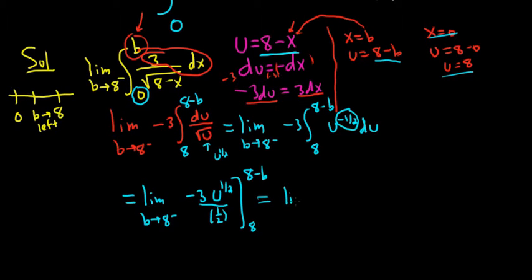This is equal to the limit. I'm going to rewrite this as B approaches 8 from the left. When you divide by 1 half, you really multiply by 2. So it's negative 6. And then here we have square root U. Writing that as a square root. And then we have 8, 8 minus B.